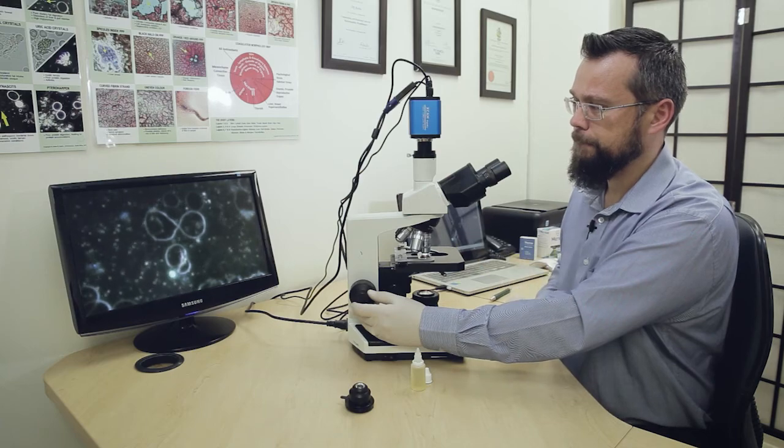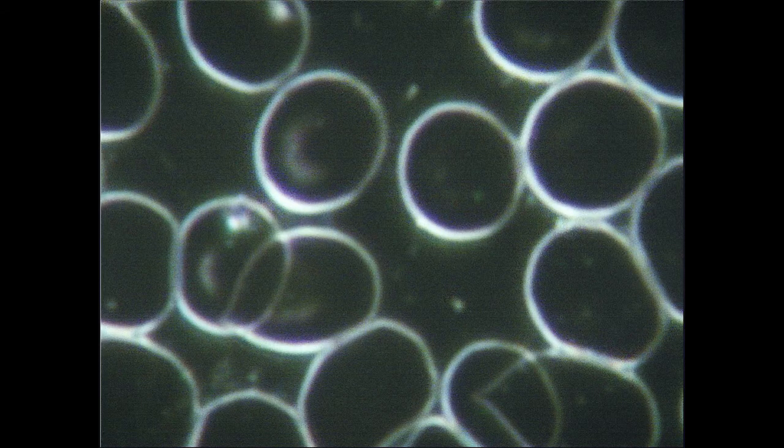Due to the higher on-screen magnification, we are achieving a total magnification of 4,000 times here. This is what a darkfield sample looks like when viewed with a standard 100 times objective. Since there is no iris diaphragm, the amount of light going through the objective cannot be adjusted, and barely anything can be seen.